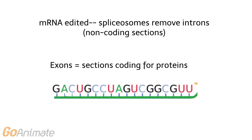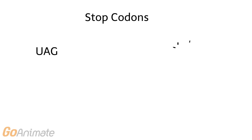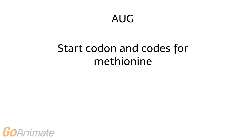mRNA is also edited by spliceosomes that remove non-coding sections called introns. Exons are sections of mRNA that code for protein. There are also start and stop codons. Stop codons include UAG, UAA, and UGA. AUG is a start codon that also codes for the amino acid methionine.